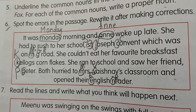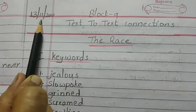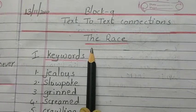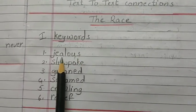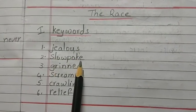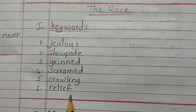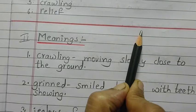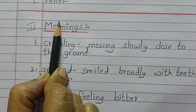Now open your English class books. Open a fresh page. Write today's date — 13-11-2020. Block 9. Draw double margin. Text to text connections. Then 'The Race'. Leave one line. First bit: keywords. Leave one line. First one: jealous. Second one: slow poke. Third one: grinned. Fourth one: screamed. Fifth one: crawling. Sixth one: relief. If it is not clear, you can open your readers and copy the keywords.